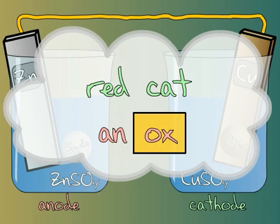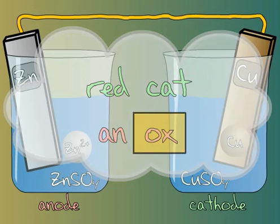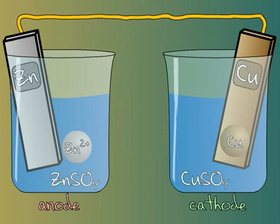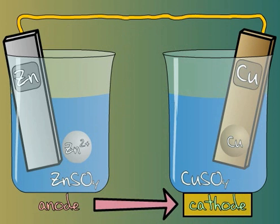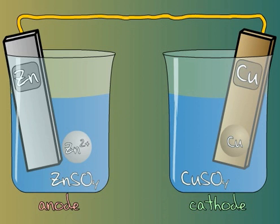Since reduction requires electrons from the oxidation reaction, electrons always flow from the anode to the cathode. The anode and cathode are commonly denoted with a minus and plus sign, respectively.